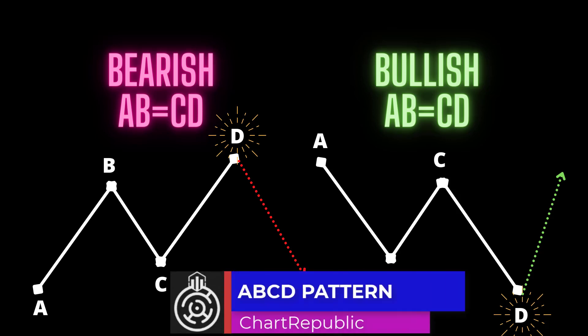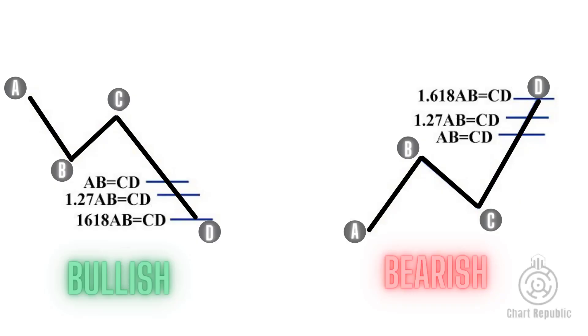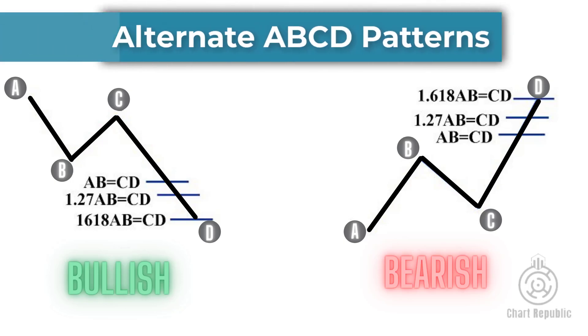The ABCD pattern is the basis for all harmonic structures and consists of two legs that ideally are the same size, but this is not always the case. The CD leg may sometimes extend to 1.272 or even 1.618 times the AB leg's length, which we refer to as alternate ABCD patterns.